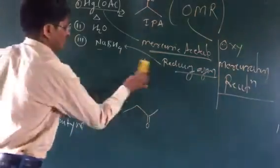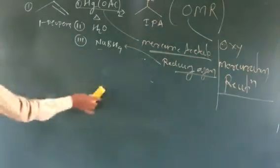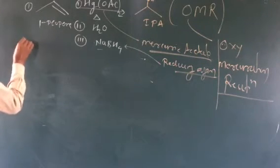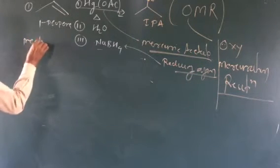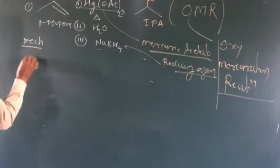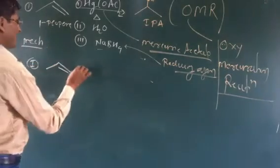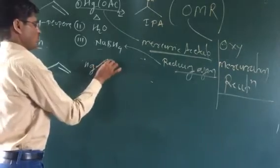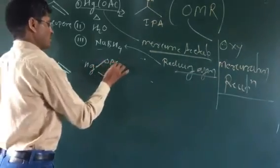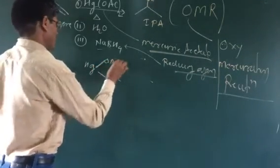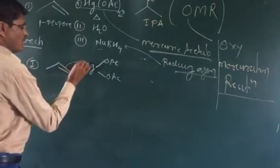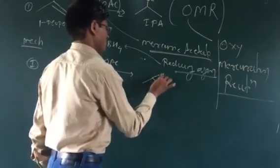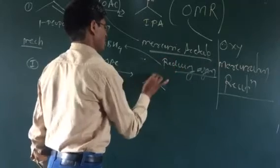We will discuss the mechanism of this reaction. The first reaction uses propene. In the first step of the mechanism, we have an alkene (unsaturated). It reacts with Hg(OAc)2 — mercuric acetate. The pi bond shifts toward the mercuric acetate, forming a three-membered transition state.